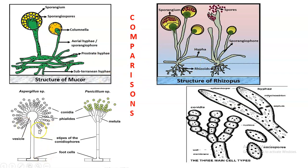Coming to the structure of conidiophores in Aspergillus, Penicillium, and Neurospora — in Aspergillus, you can see a vesicle formed at the tip of the conidiophore, from which you can see the metulae, sterigmata, and conidia. In the case of Penicillium, this globose vesicle is missing. In the case of Neurospora, the conidia is seen to form on the tip of the conidiophore, and we are not mentioning any metulae or sterigmata-like structures.